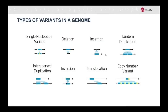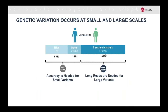There are many types of variants in the genome, ranging from single nucleotide variants, deletions, insertions, tandem duplications, interspersed duplications, inversions, translocations, and copy number variants. These are all very important because that's what makes us different from one another and what contributes to both health and disease.